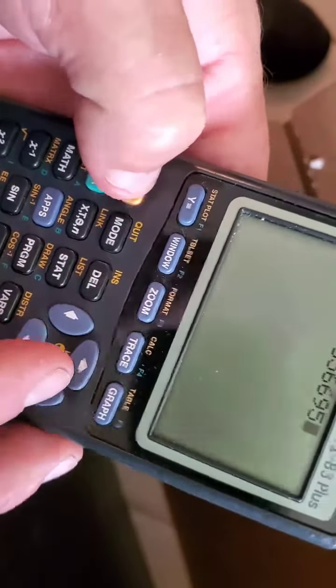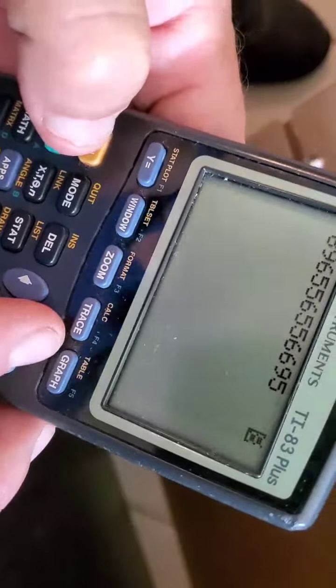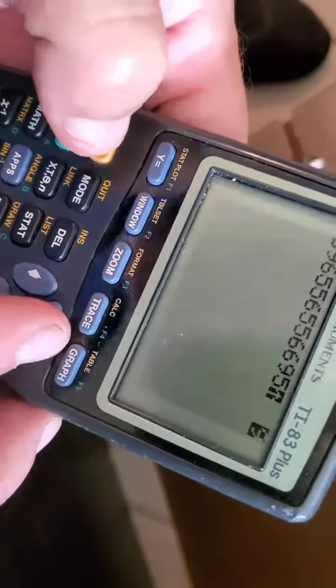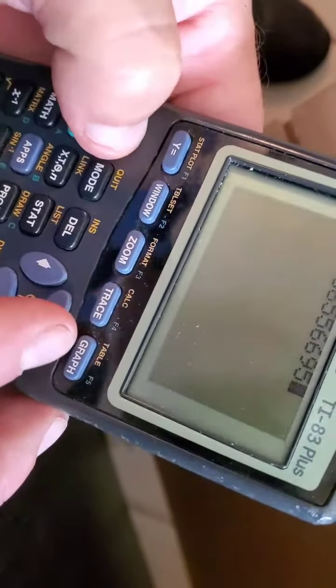Then if you want to darken it up, you can do the same thing. You go second, up, second, up, second, up, and over time it'll start to get dark again.